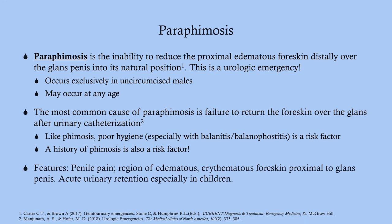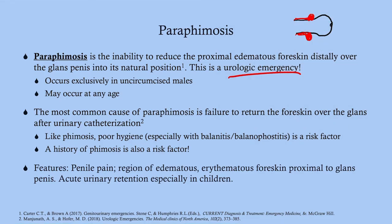Paraphimosis is a different beast — it's the opposite. It is the inability to reduce the proximal edematous foreskin distally over the glans penis into its natural position. Basically, you are unable to get the foreskin back over the corona, the proximal part of the penile head. This area becomes very edematous and swollen, getting stuck there with a red, swollen, very tense foreskin. This can cut off circulation to the head of the penis, resulting in ischemia and necrosis — making it a urologic emergency.